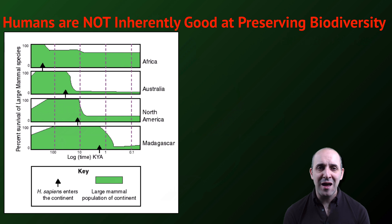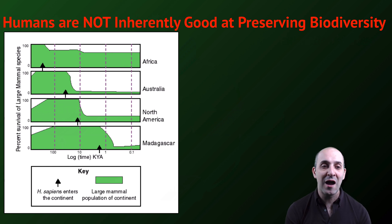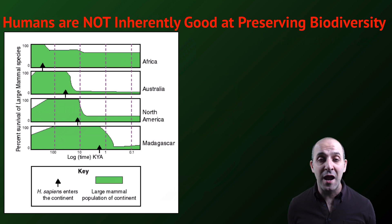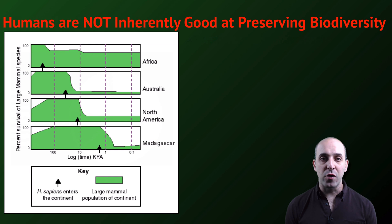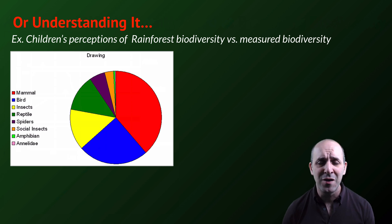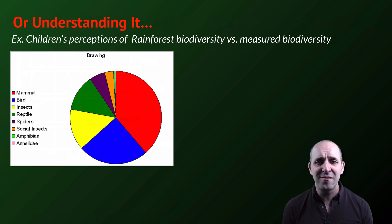Now for some bad news. Humans are not inherently good at preserving biodiversity. This graph shows the percent survival of large mammal species on the major continents of the planet once anatomically modern humans arrived on the scene. In almost each instance, the amount of large mammal species declines precipitously after the arrival of humans. That's completely understandable since humans require food and other resources, and the killing of large mammals was an obvious way to get those resources in the ancestral condition. But humans are also not particularly good at understanding biodiversity.